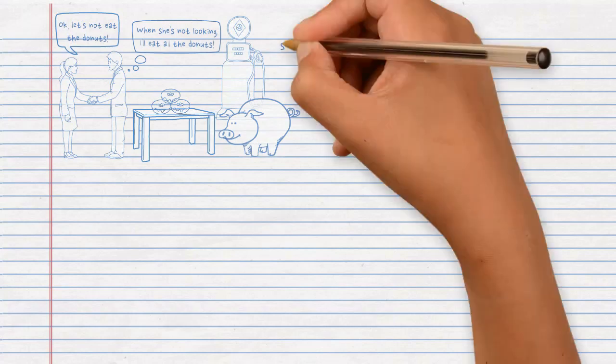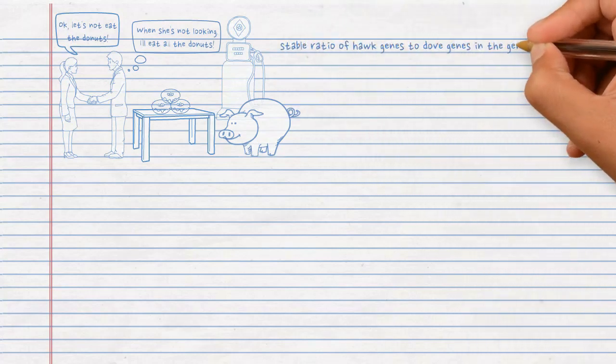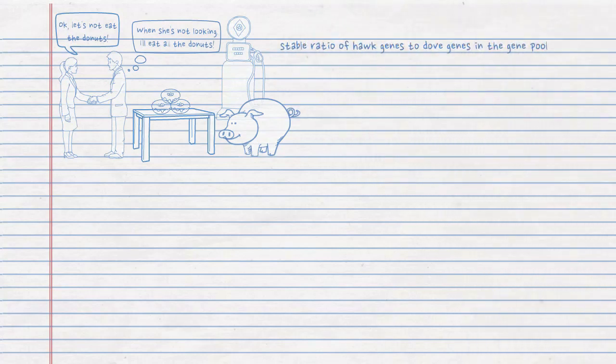In a stable ratio of hawk genes to dove genes in a gene pool, the technical term in genetics for this state is called stable polymorphism. If every individual is capable of behaving like hawk or dove, ESS can still be achieved without polymorphism with the same probabilities — namely 7/12 as hawk and 5/12 as dove.